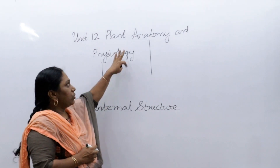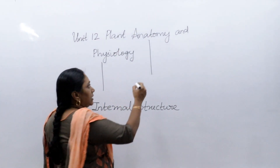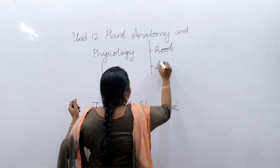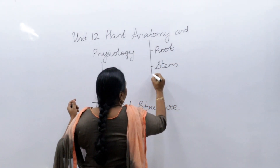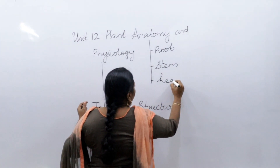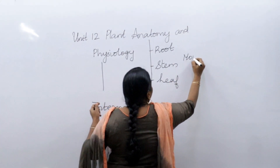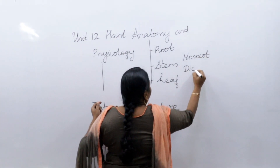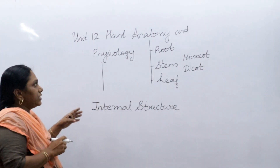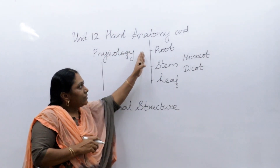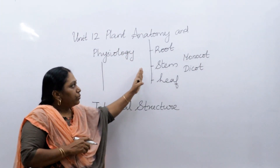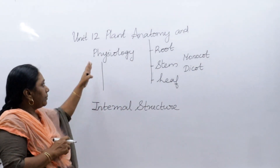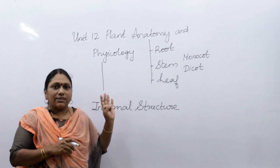Three main things we will study in this lesson: anatomy of root, anatomy of stem, and anatomy of leaf — for both monocot and dicot. Under anatomy we will read about dicot root, monocot root, dicot stem, monocot stem, dicot leaf, and monocot leaf.